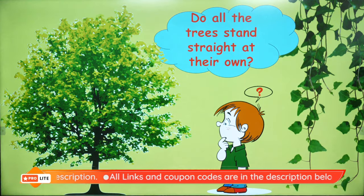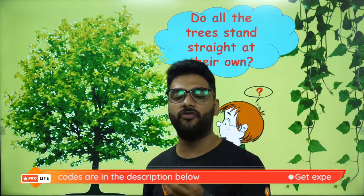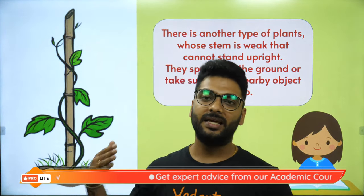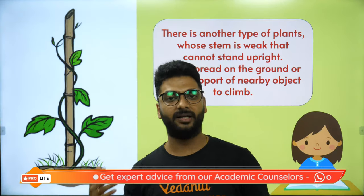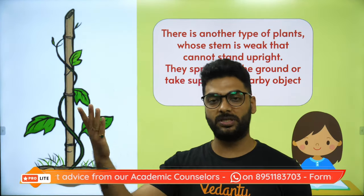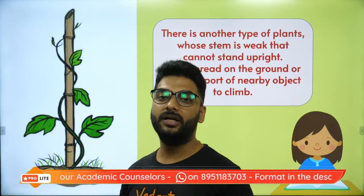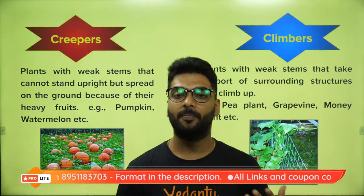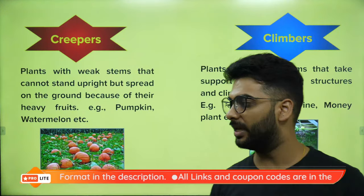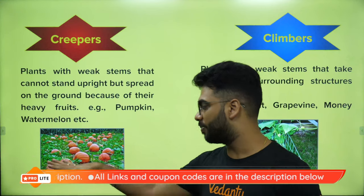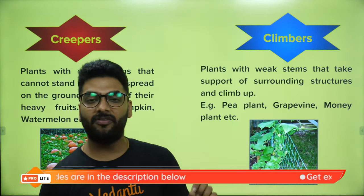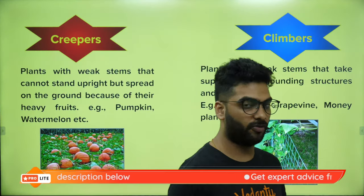Not all plants stand straight on their own. We have two different soft-stemmed plants: climbers and creepers. Climbers like the pea plant and money plant need support to climb up, like the monstera. Creepers spread on the ground — like watermelon, muskmelon, and pumpkin. Even your bottle gourd is an example of a climber.